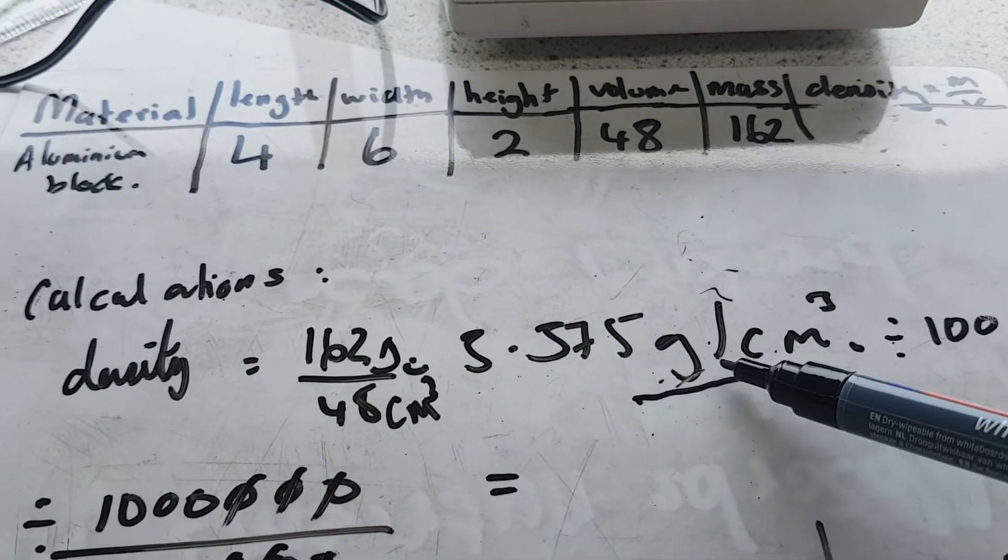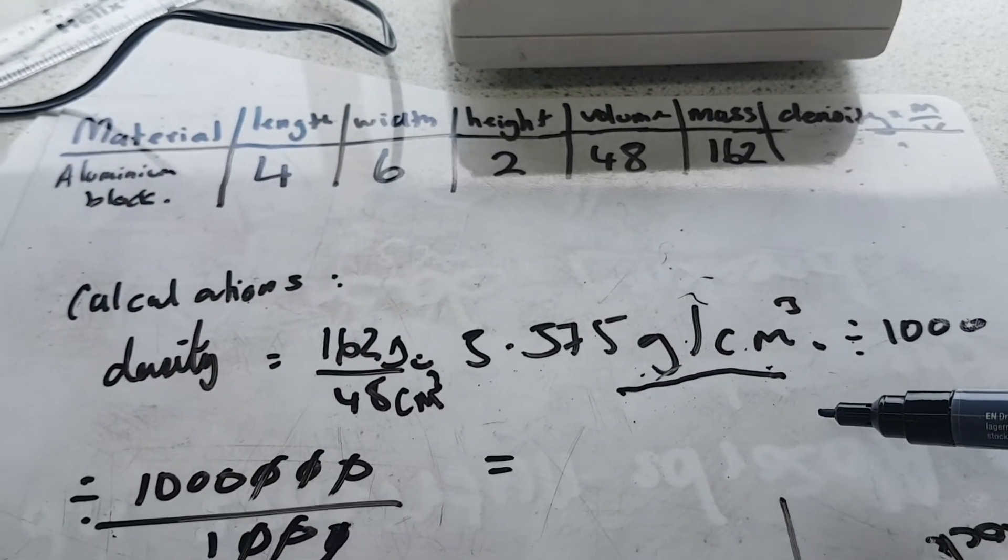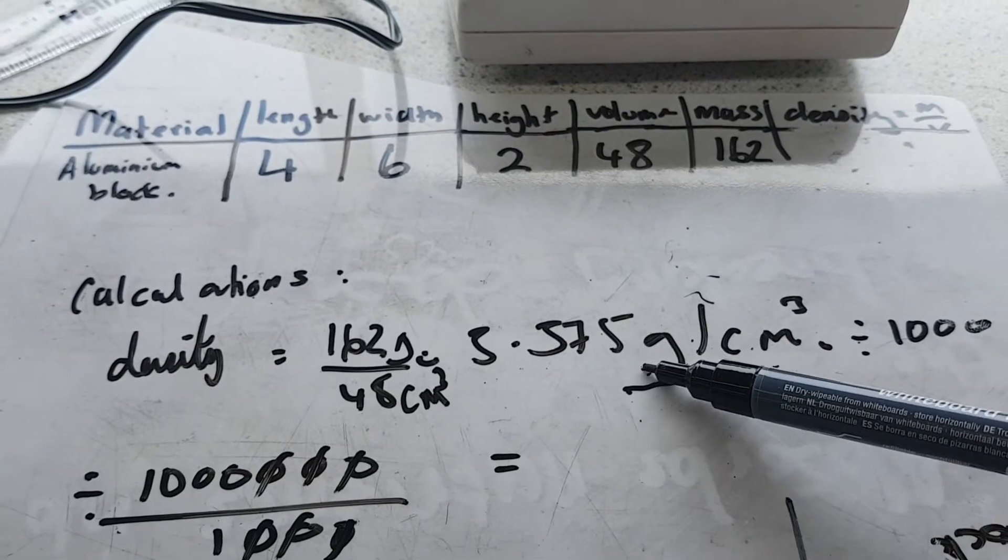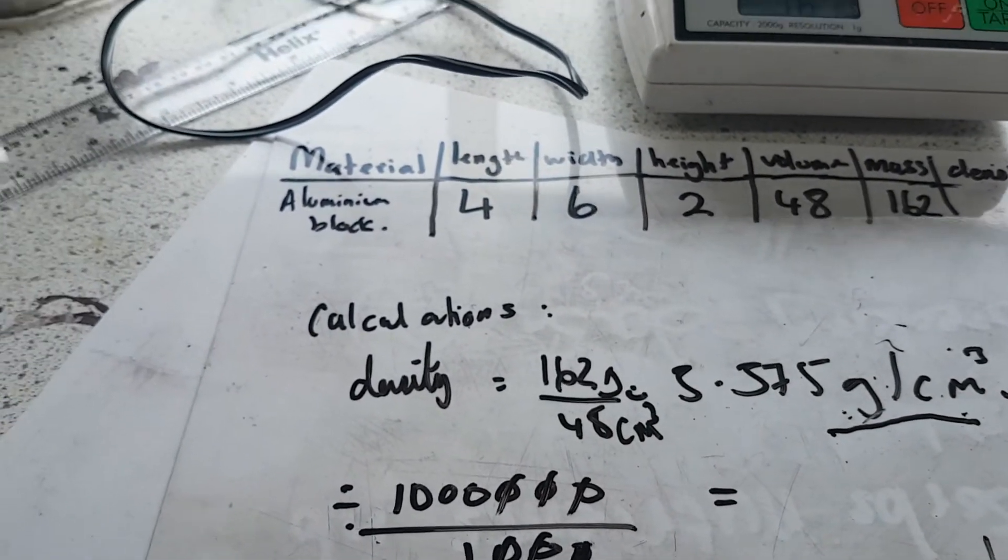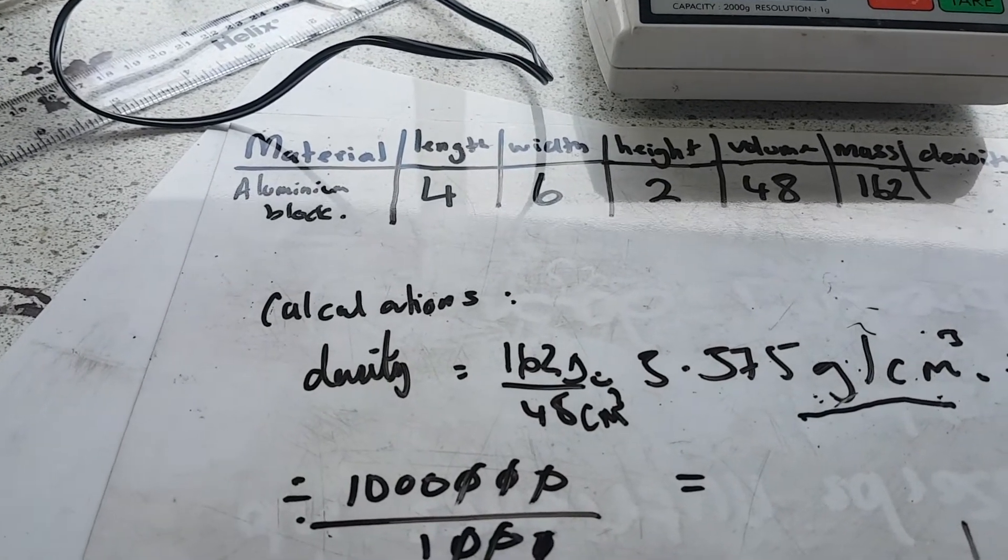So you're okay here, but then right at the end, divide the answer by a thousand to give you the answer in kilograms per meter cubed. And that is for a regular object. Next, we're going to look at irregular objects.